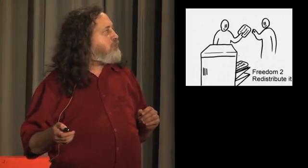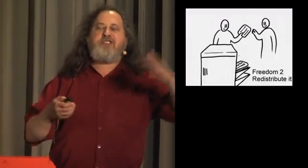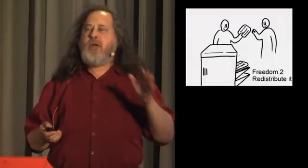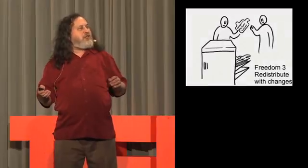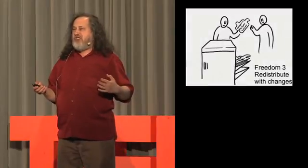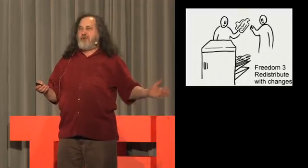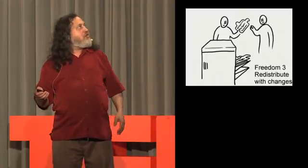Collective control requires two more essential freedoms. Freedom two is the freedom to redistribute exact copies, to make the copies and then give them away or sell them when you wish. And freedom three is similar, but it's for your modified versions. You're free to make copies and then give them or sell them when you wish.